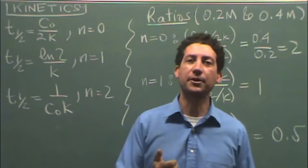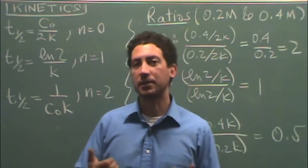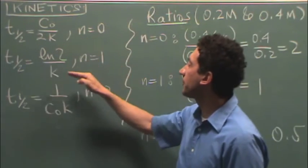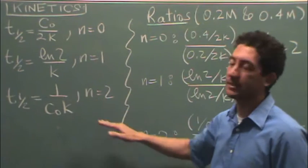For the first part of the kinetics lab, we're trying to figure out the order of the reaction. So let's take a look at the half-lives, because that's how you're measuring it. Here's the formula for each half-life, for zero, first, second order.